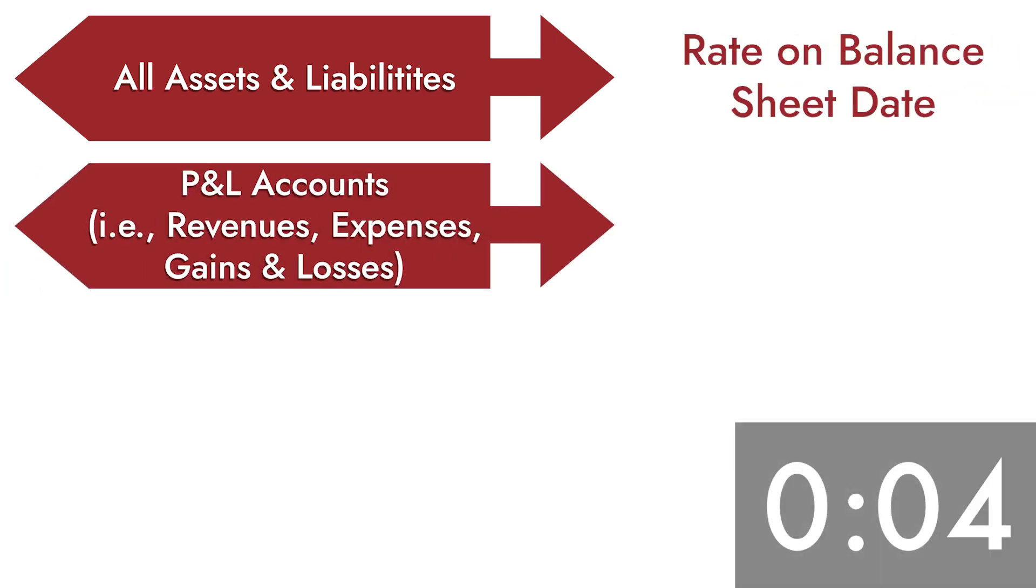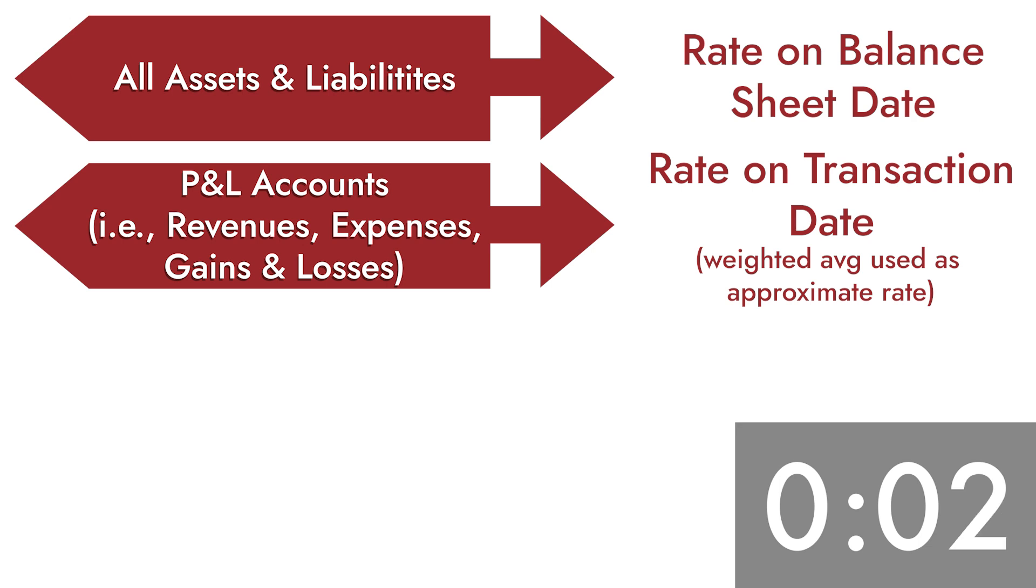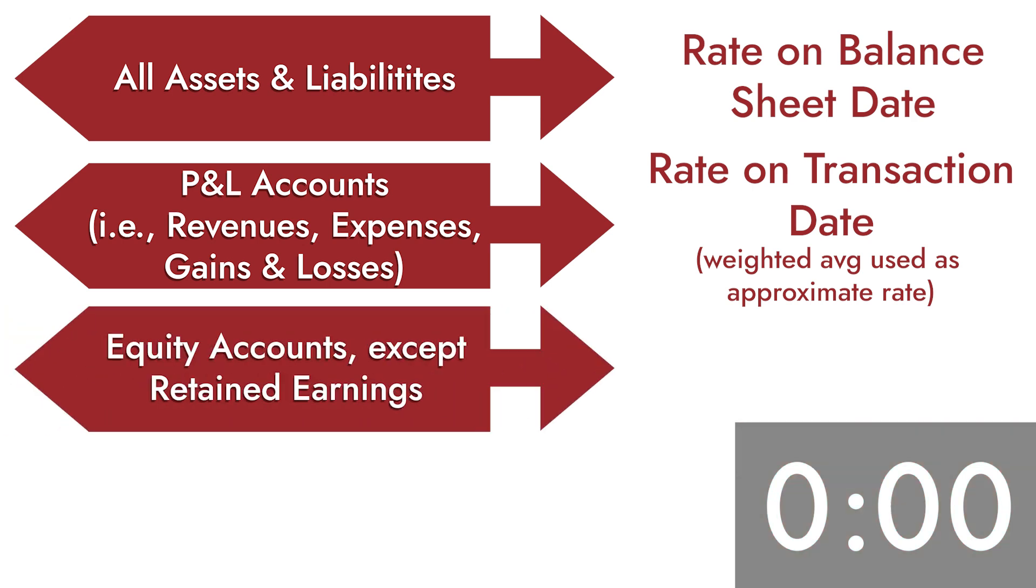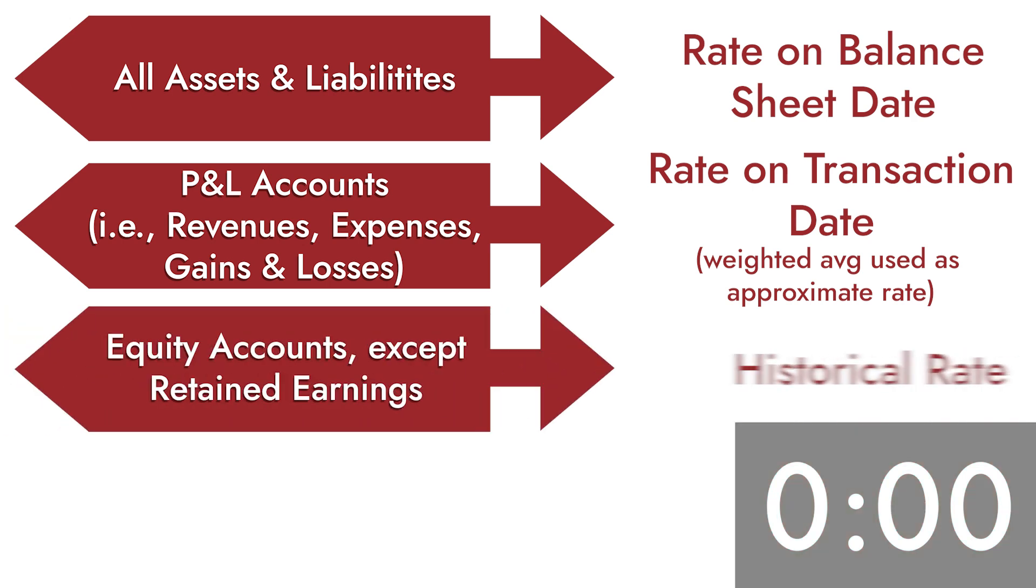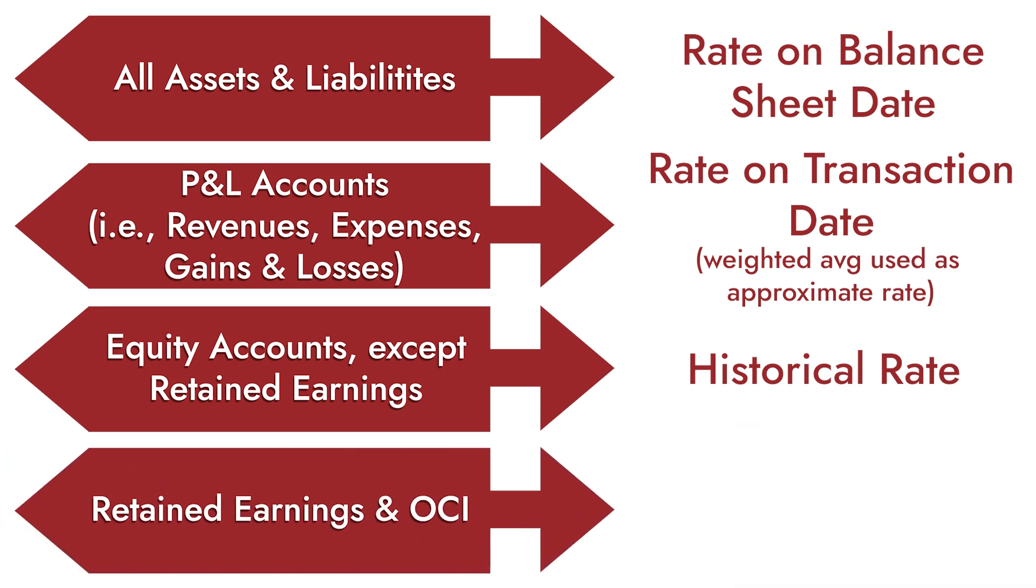P&L accounts, those are translated using the rate that was in effect on the date of the transaction. But usually, a weighted average rate is used as an approximate rate. Equity accounts are translated using historical rate, and retained earnings in OCI are also historical rate by tranche.